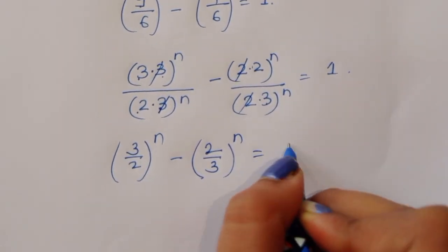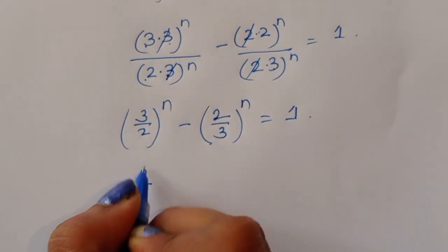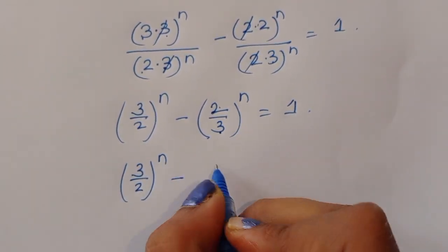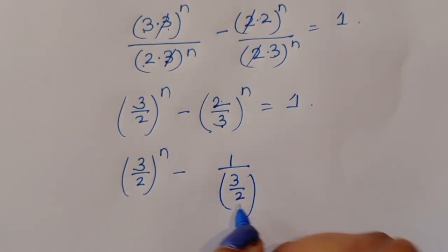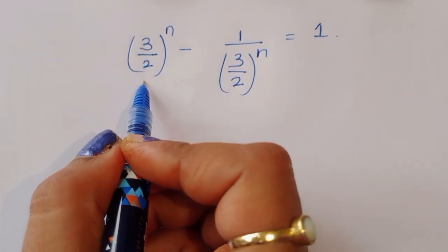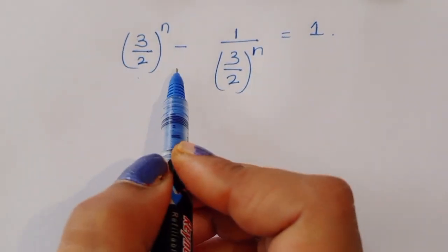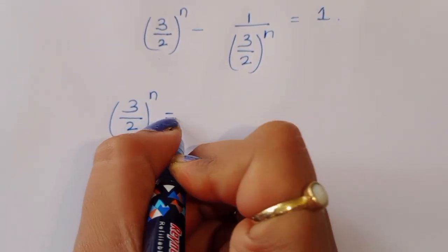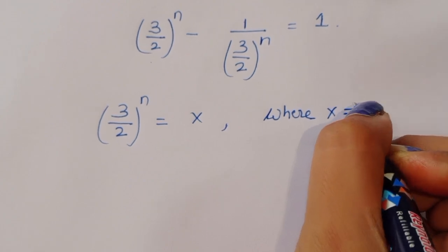After cancellation we get (3 upon 2) power n minus (2 upon 3) power n is equal to 1. We can write (2 upon 3) power n as 1 divided by (3 upon 2) power n. Now we notice both terms involve (3 upon 2), so let us consider (3 upon 2) power n as a substitution.